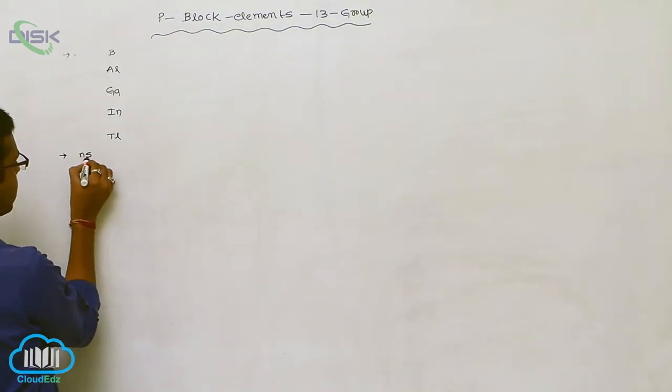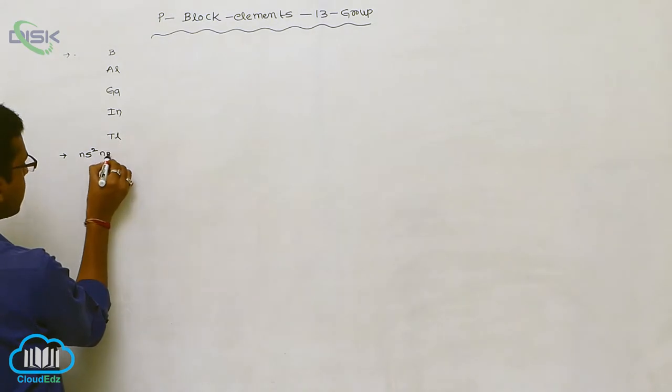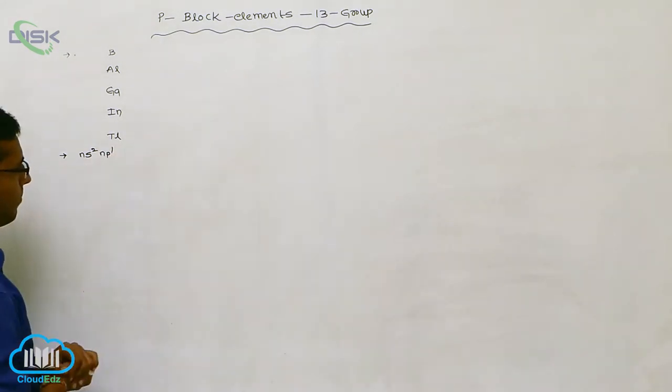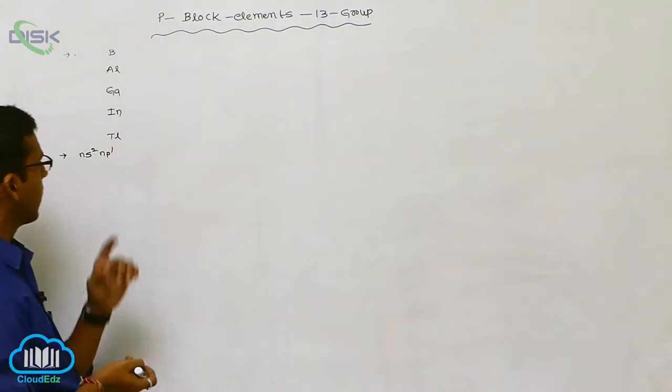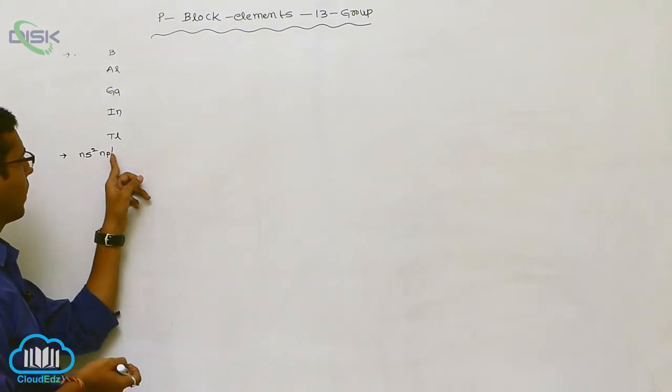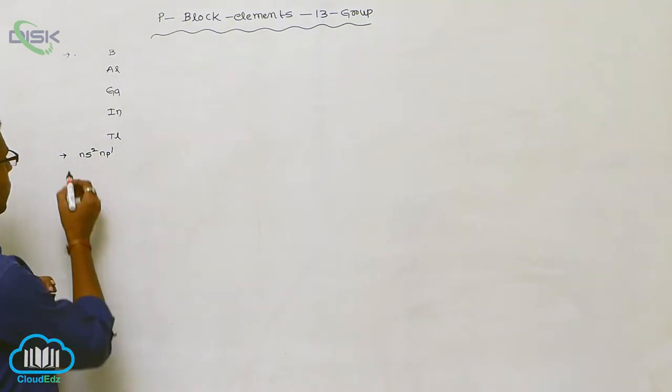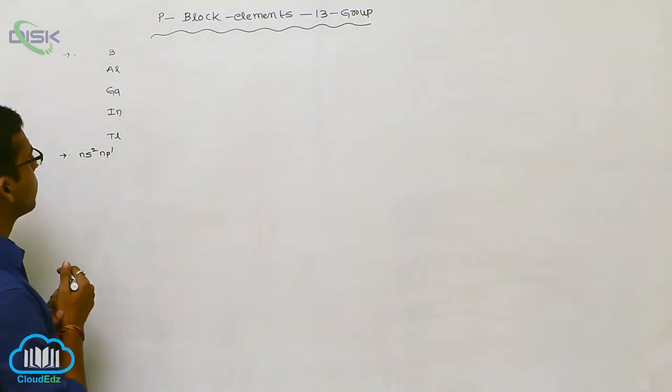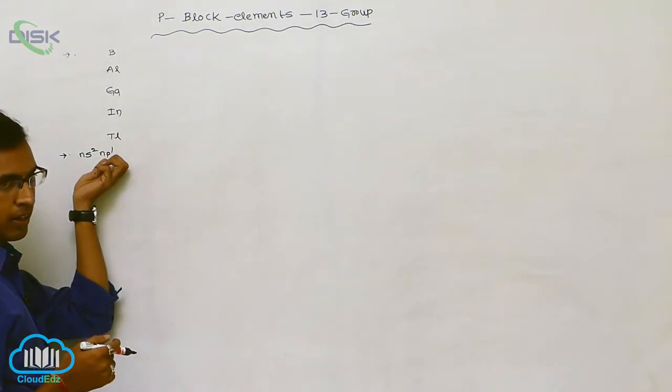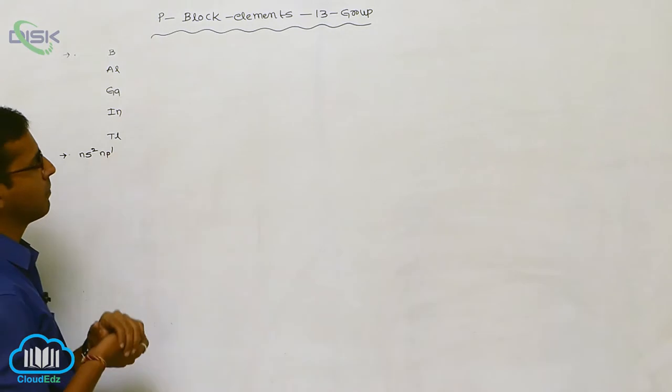This 13th A group element general electronic configuration is NS2 and P1. This means the outermost shell contains here only one electron. So 2 plus 1, total 3 electrons are present in the outermost shell. The differentiating electron is entering into the P orbital. That is why it belongs to p-block elements.